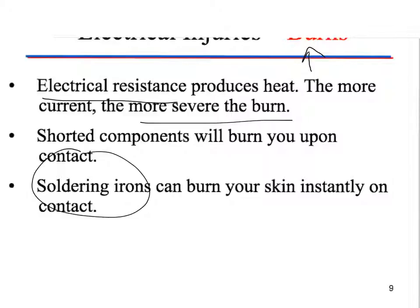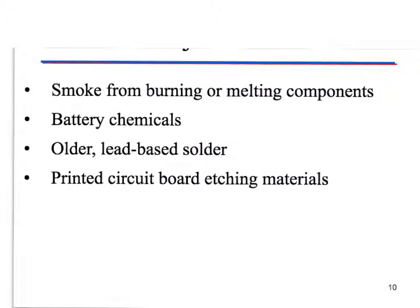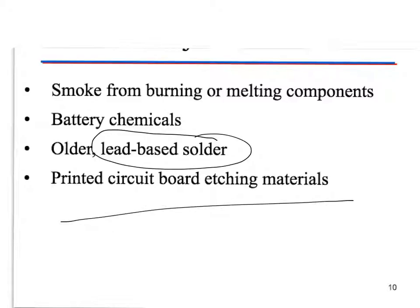Soldering irons — we will use these, especially early on in the class. Soldering is extremely hot; it's going to burn your skin, your skin is going to turn black, and it's going to smell, so we've got to be very safe when using solder. Regarding chemical injuries: smoke from burning or melting components, battery chemicals, lead-based solder — which we do not use because it's now illegal — and printed circuit board etching materials are all things that can cause injuries.